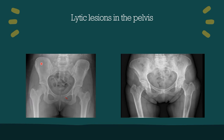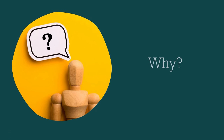Here is a smooth-looking pelvis, and here is a pelvis that has lytic bone lesions. The question we are trying to solve here is: why?